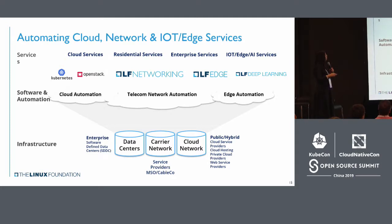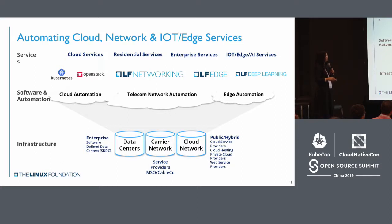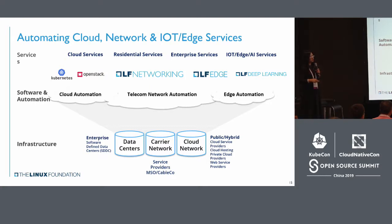Cloud and telecom networks will do some automation, and also OpenStack. For LF, you have ONAC and FIDO, which might provide some automation. LF also includes deep learning based on AI to provide automation tools. In infrastructure, we have cloud, carrier, and data center. You can see multi-segments and multi-use cases.